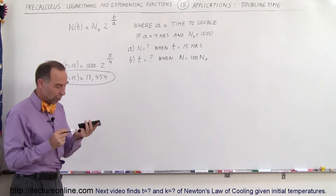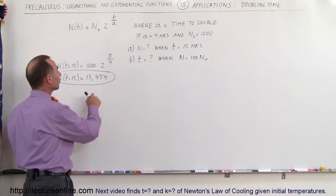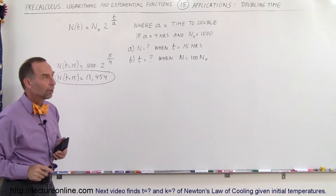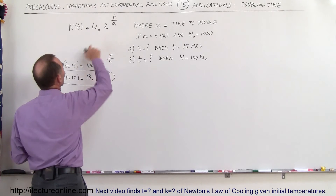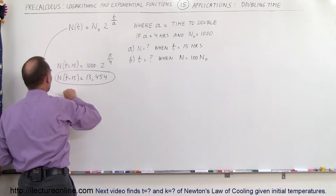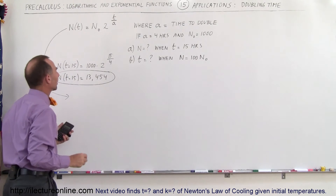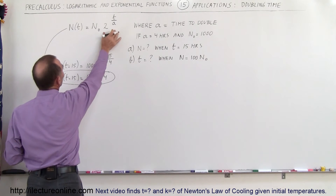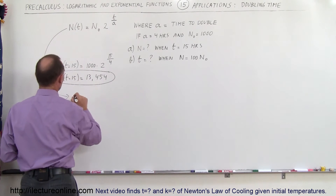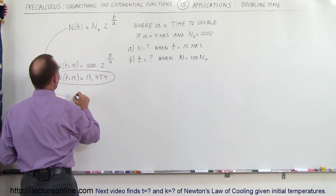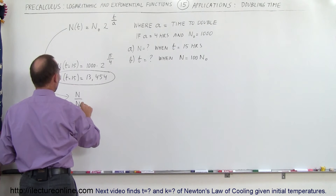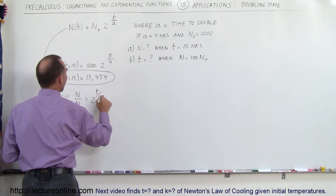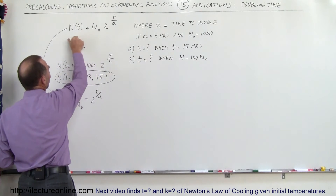Now we're trying to find how long it will take for the quantity to reach a hundred times a thousand, which would be a hundred thousand. For that we need to solve for t in this equation. We're going to first isolate the 2 raised to the t over a power by dividing both sides by n sub naught. So n divided by n sub naught is equal to 2 raised to the t over a power.